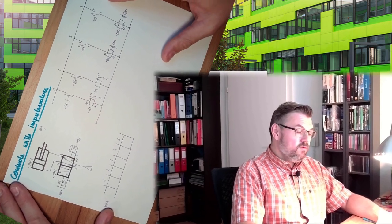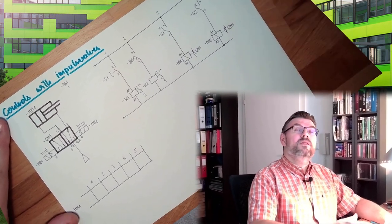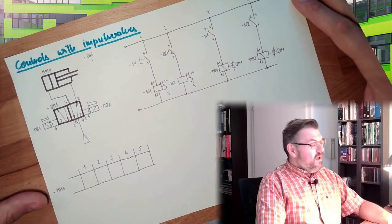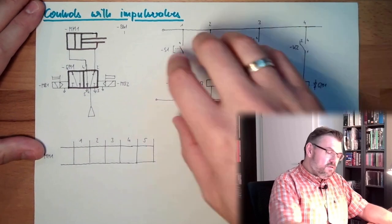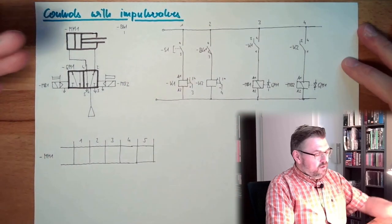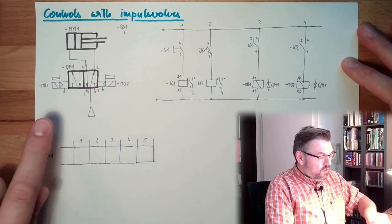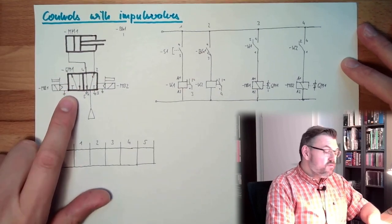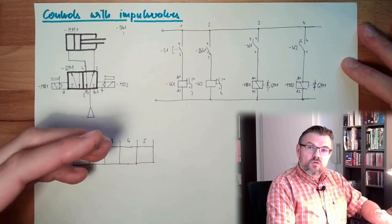So what do we have? What have we got here? This is the pneumatic part, this is the electrical part. Pneumatic part: one cylinder, one limit switch at the outside wall. We have an impulse valve. So this means an impulse here is sufficient to control this.